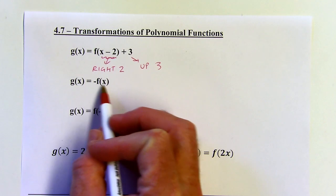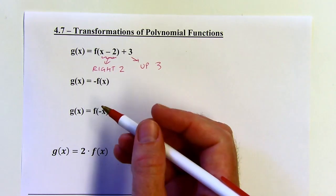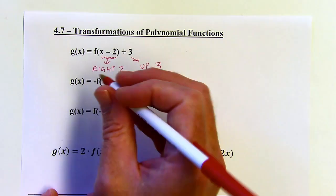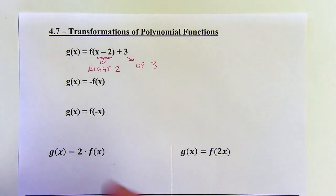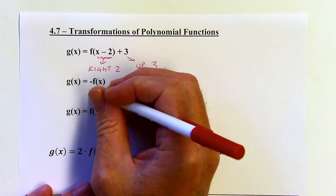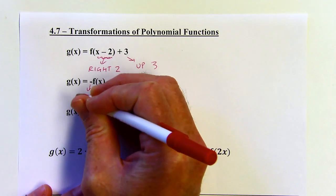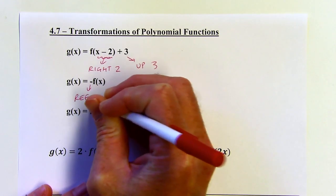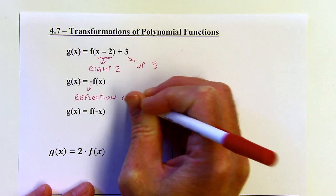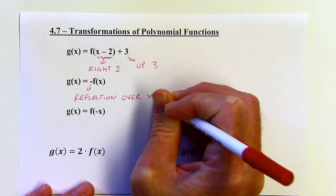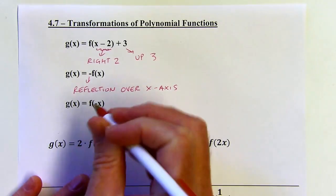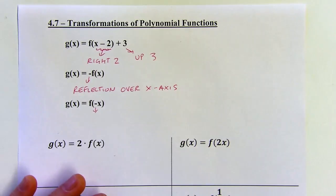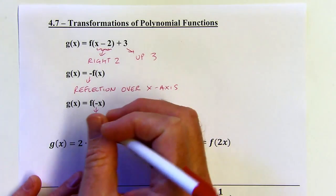If you think of f(x) as y, if you take the opposite of y, then you're reflecting over the x-axis. If you take a point and change the y-coordinate to a different sign, that's going to reflect over the x-axis. So this is a reflection over the x-axis. And when we're taking the opposite of the input, that's going to reflect over the y-axis.